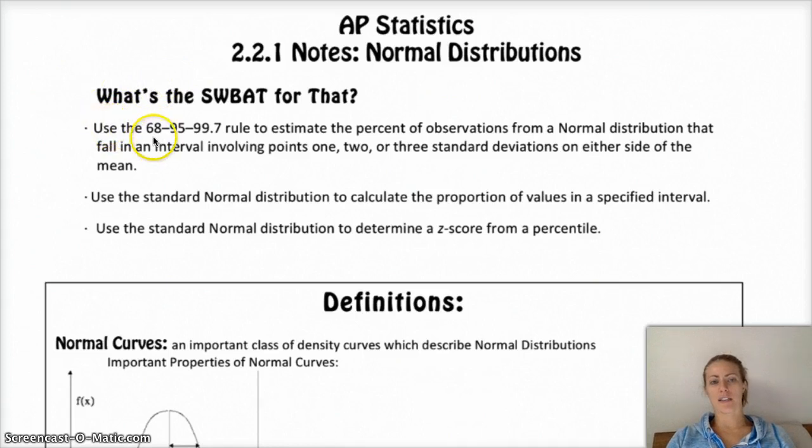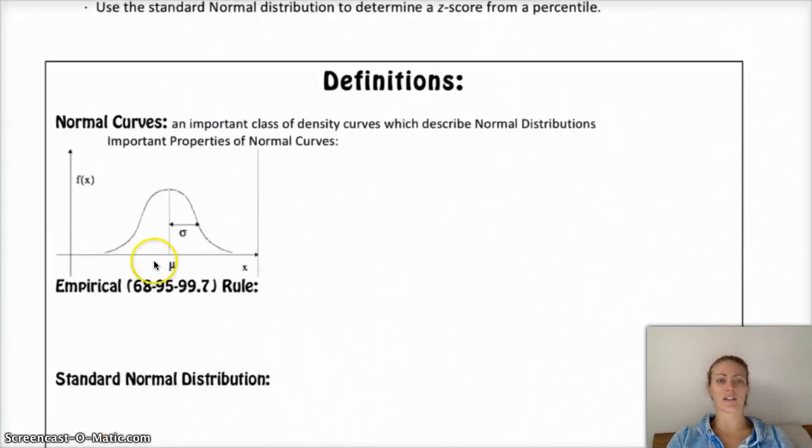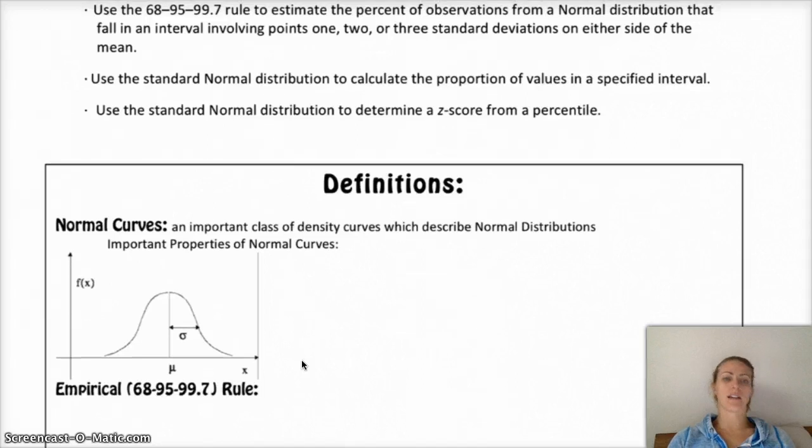So first we're going to talk about what the 68-95-99.7 rule is. This is also called the empirical rule, so if I use the term empirical rule, you should know that it's the same as the 68-95-99.7 rule. We're going to talk about how to use that rule to calculate proportionate values within a specific interval on a normal curve, and then determine the z-score from a percentile.